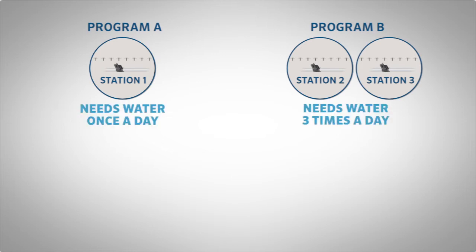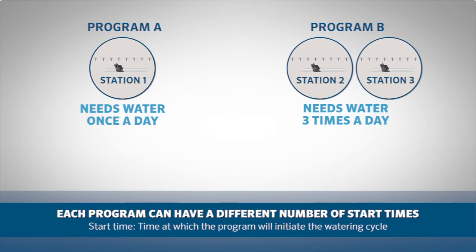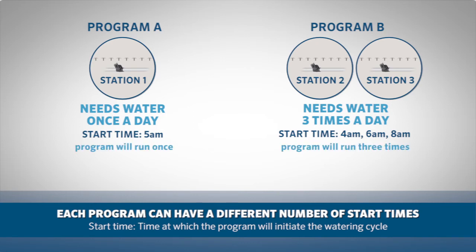Another reason for separating stations into programs would be if some of your zones need to be watered only once a day, and other zones need to be watered multiple times a day. Each program can have a different number of start times. The start time is the time at which the program will initiate the watering cycle.